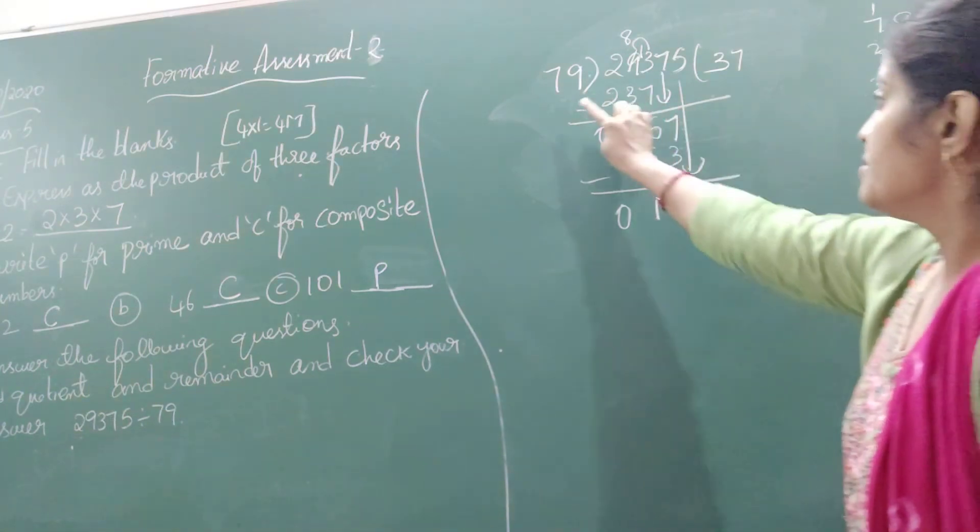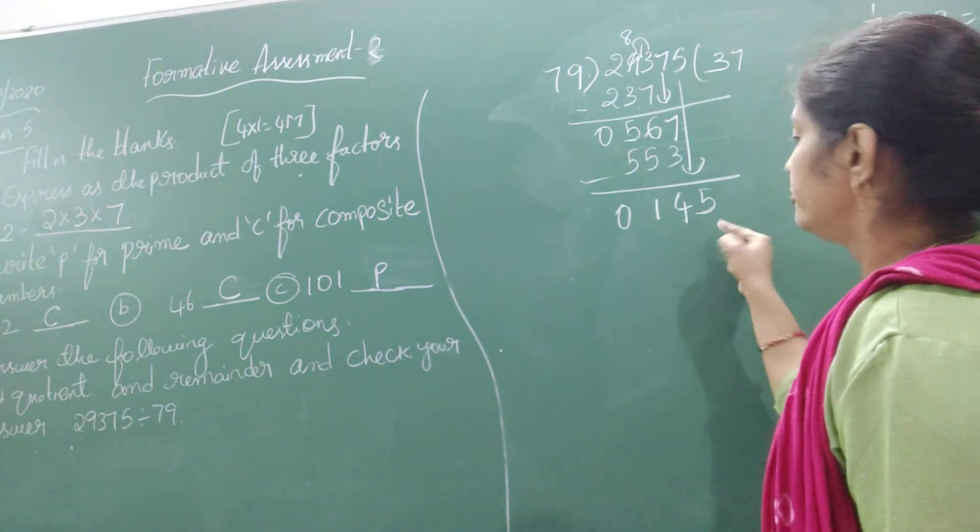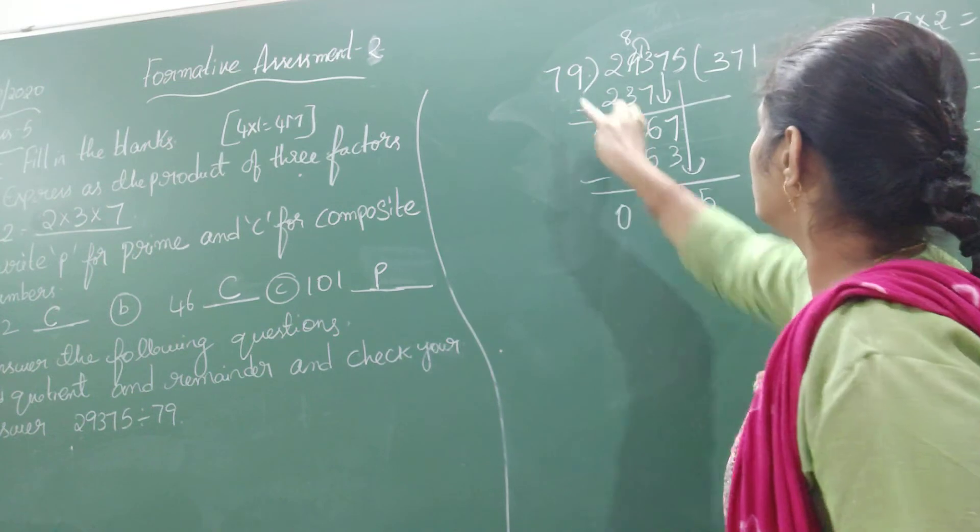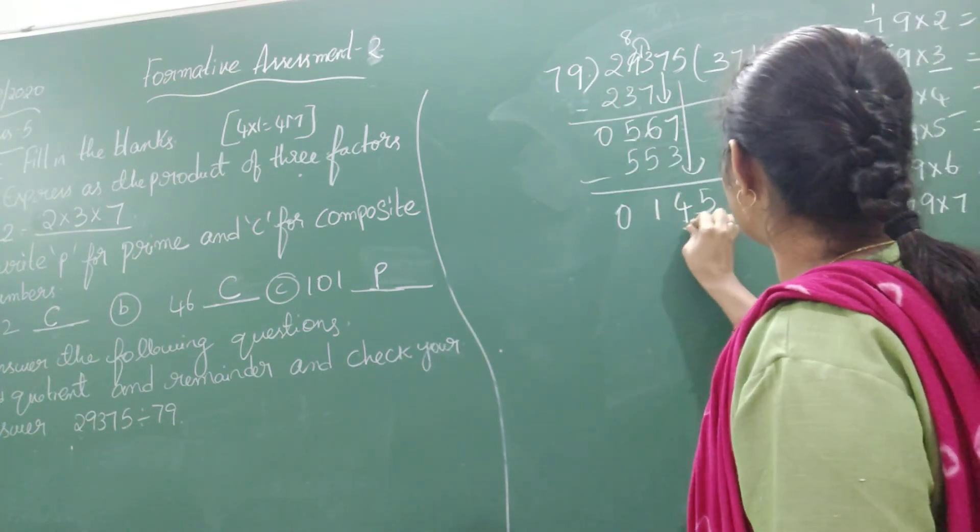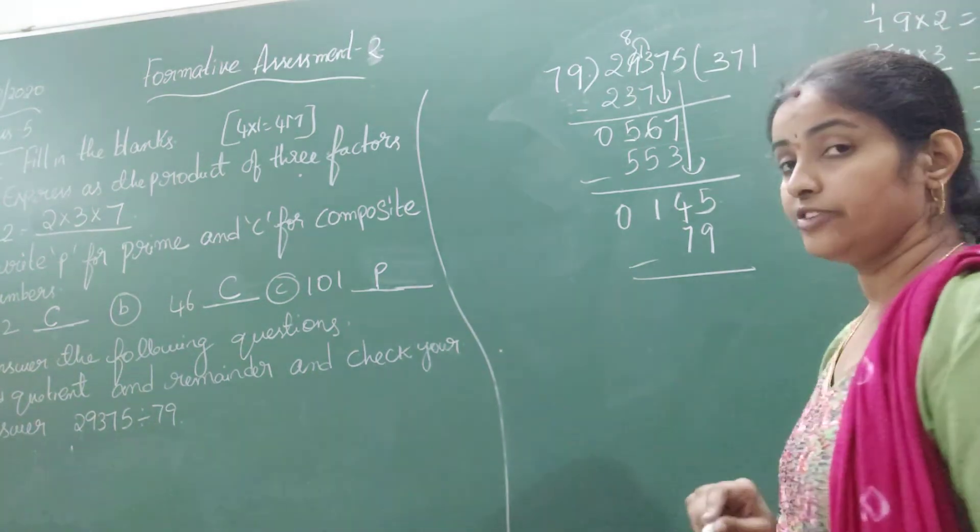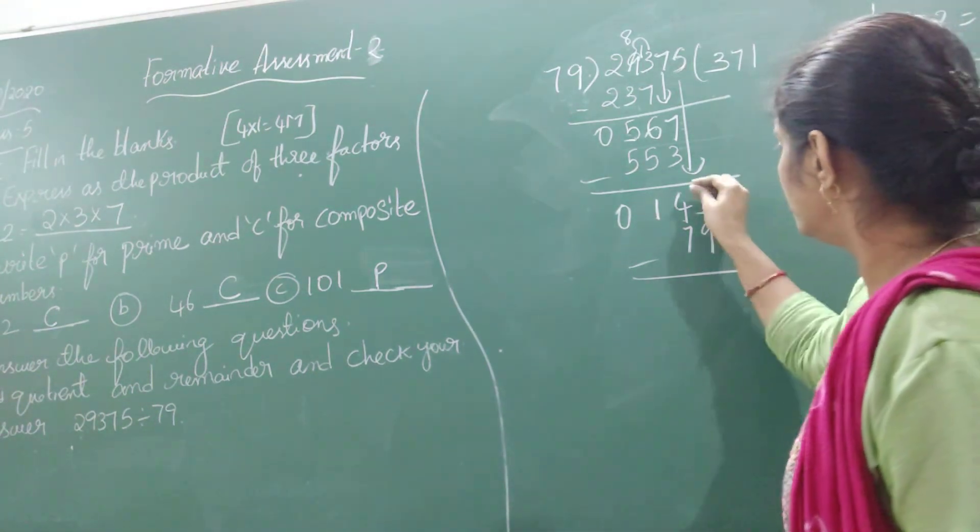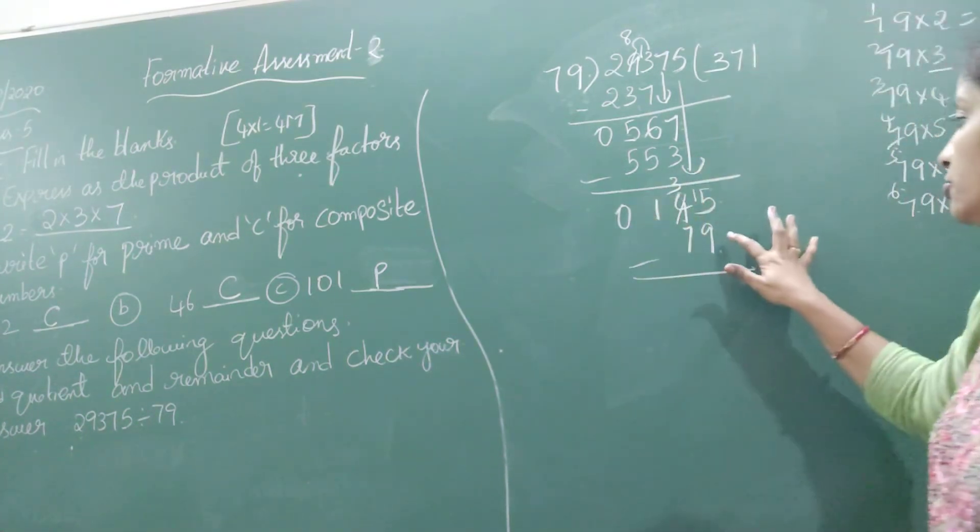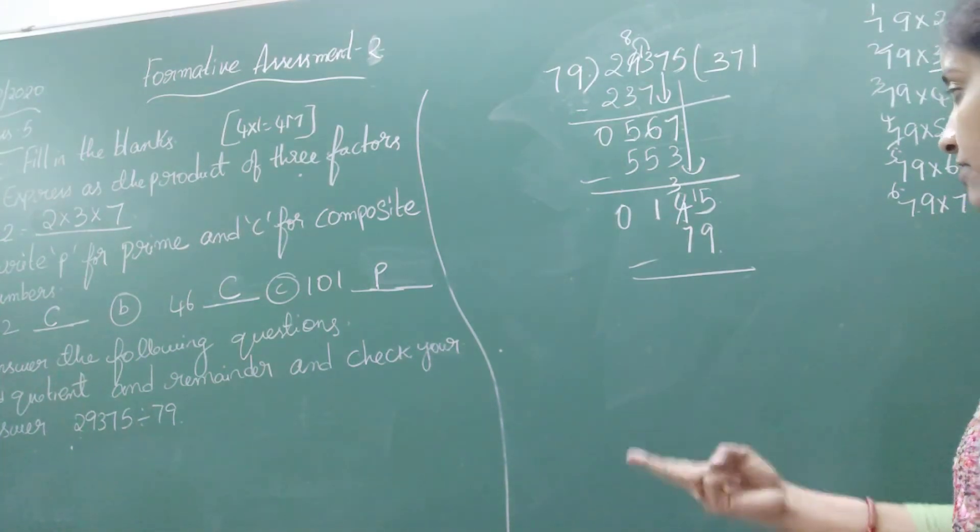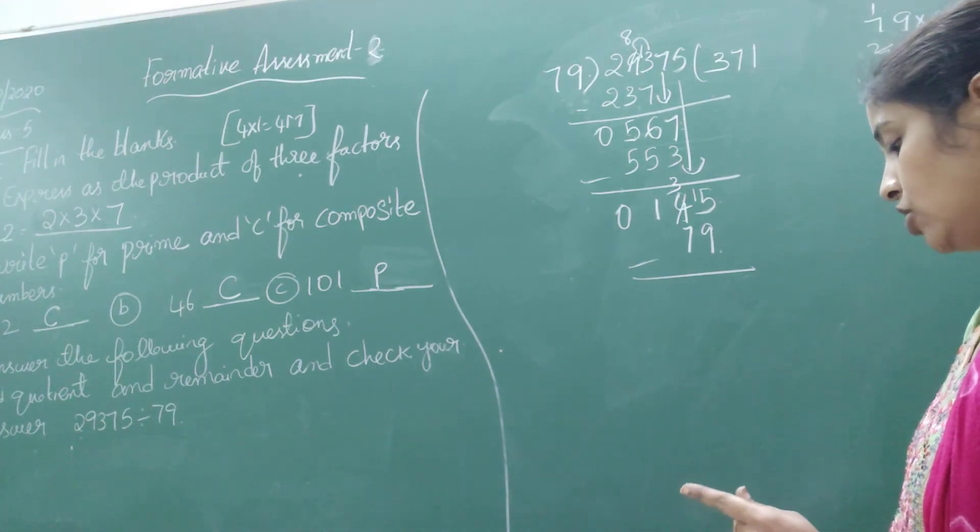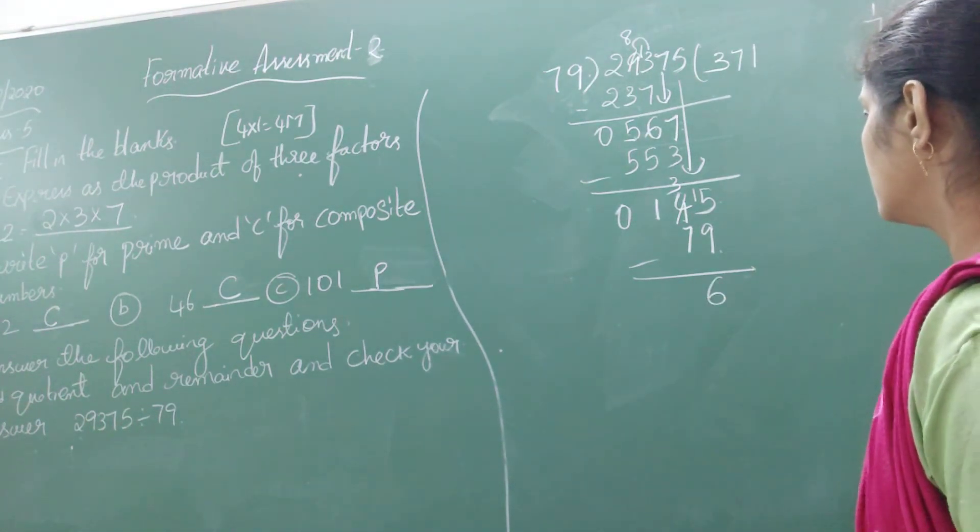Drop the next number, which is 5. Now 79 into 145 how many times? Not possible by taking 79 times 2, so I need to go with 1 time. 79 times 1 is 79. Now subtract. 5 minus 9 not possible, so take a borrow. You will get 15 and here 3. That gives us 6.